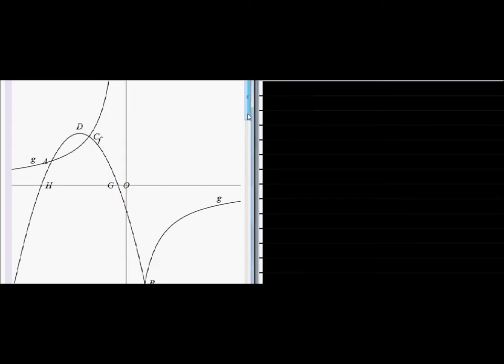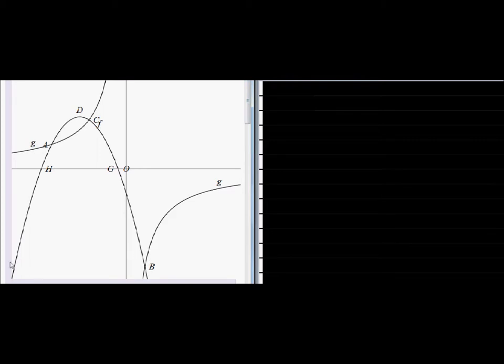So there we have A, that point, C, that point, and go down a bit to B. They are the intersection of graphs g and graph f. Okay, let's go and answer the questions.